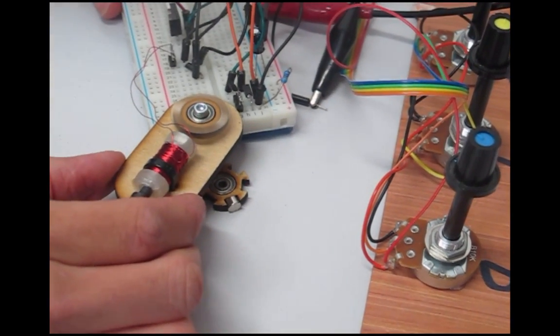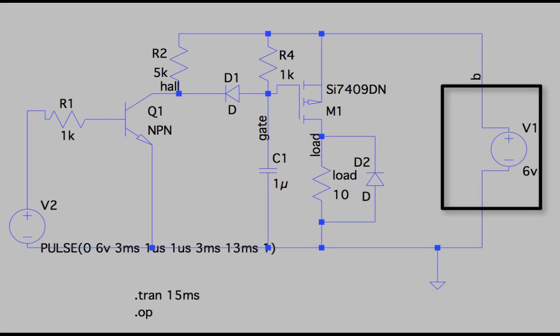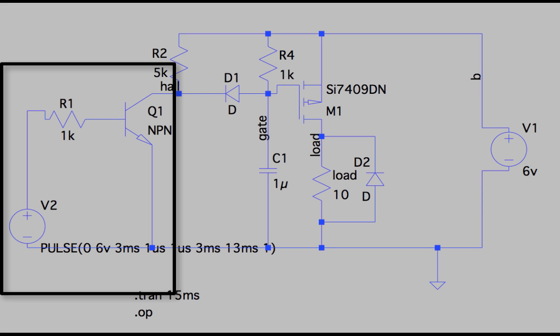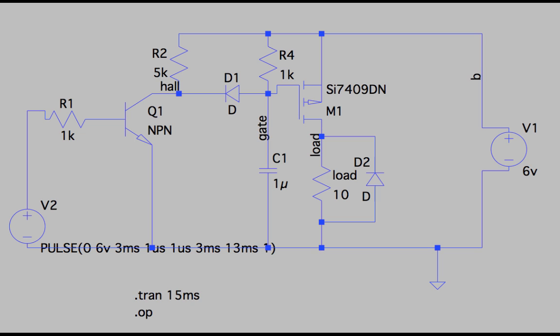So let's take a look at how the circuit works. This part is the power supply and this section over here is representing the hall effect sensor. When the hall effect sensor is turned on by the magnet this point here becomes zero and so does this. So that the p-channel MOSFET turns on the load here which is the solenoid. So that will attract the magnet.